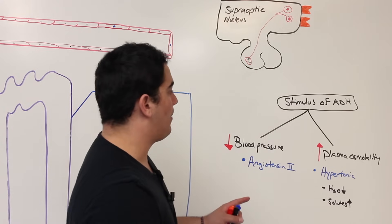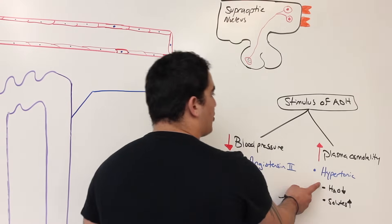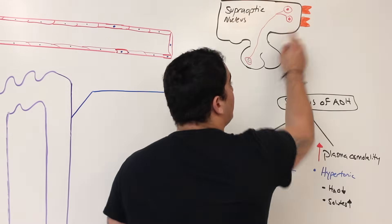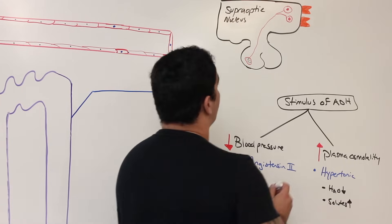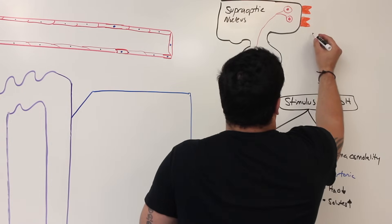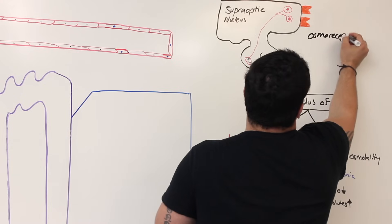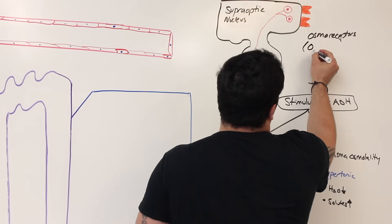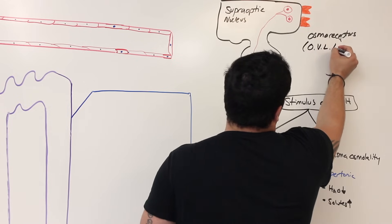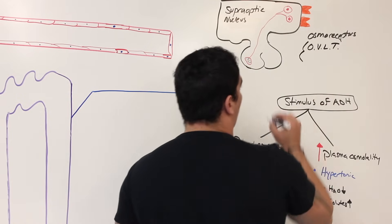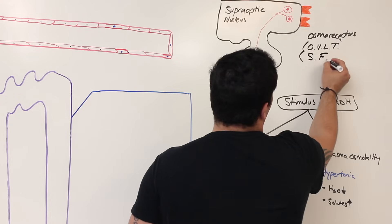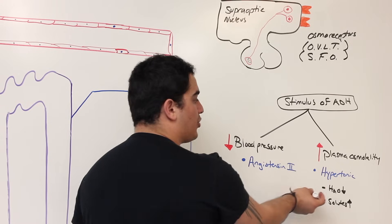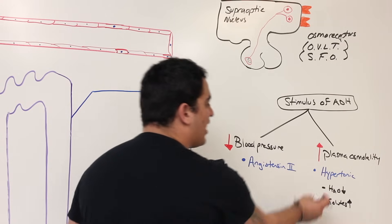How does the hypothalamus pick up this change in plasma osmolality? You see these osmoreceptors right there? One is called the organum vasculosum of lamina terminalis, and the other is called the subfornicular organ. These two are picking up the change in the tonicity and concentration of the actual blood — the water and the solutes.